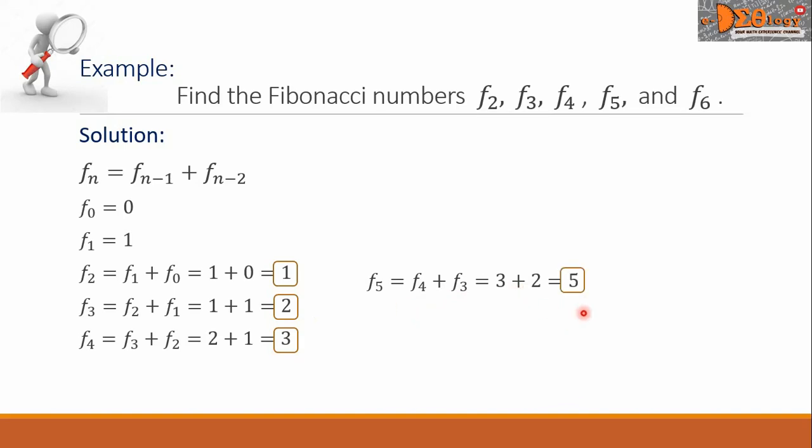This is our F sub 5. Then, F sub 6 equals F sub 5 plus F sub 4. F sub 5 is 5 plus F sub 4 is 3. So the sum is equal to 8. This is our F sub 6.